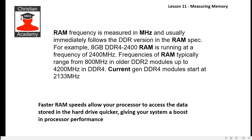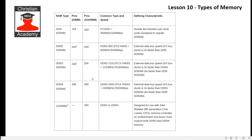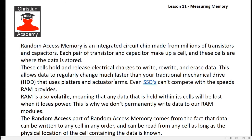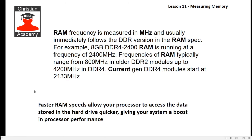RAM frequency, which we can refer to as speed, is measured in megahertz, usually immediately followed by the DDR version. For example, 8 gig DDR4 — that's the fourth release of DDR memory. 2400 RAM is running at a frequency of 2400 megahertz. Looking back at the previous slide, I still remember 533 megahertz and slower memory than that — we had 400 megahertz. So the memory is slower in its operation, and faster RAM can be a performance improvement.